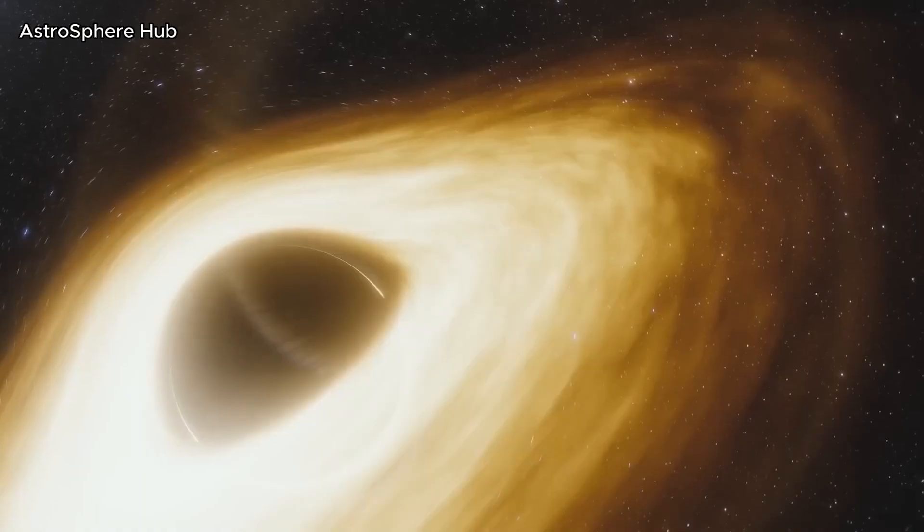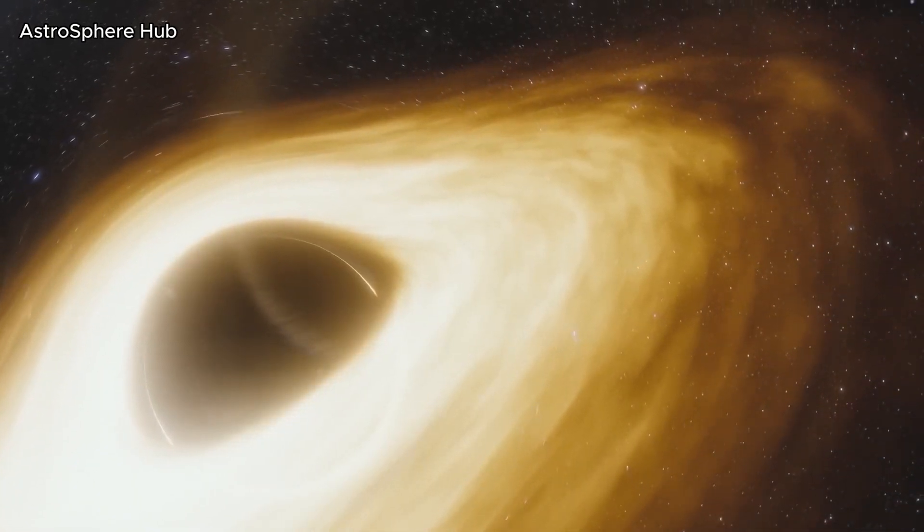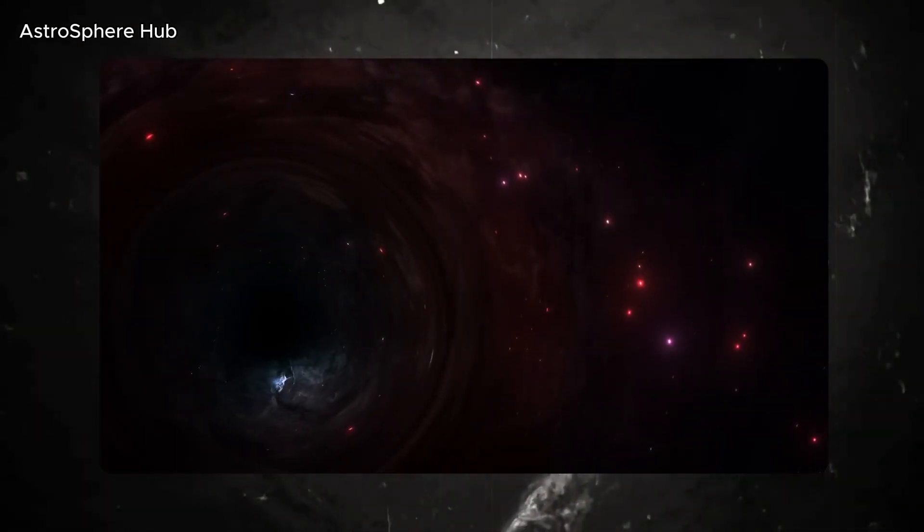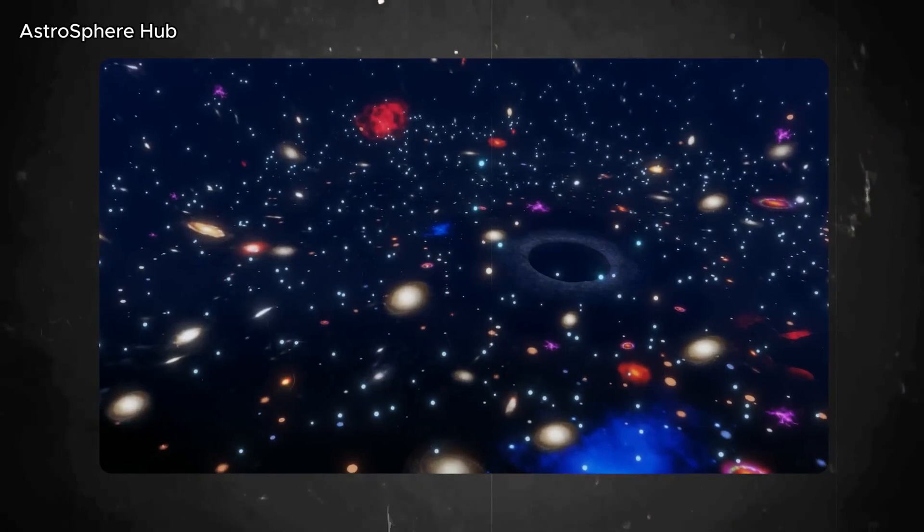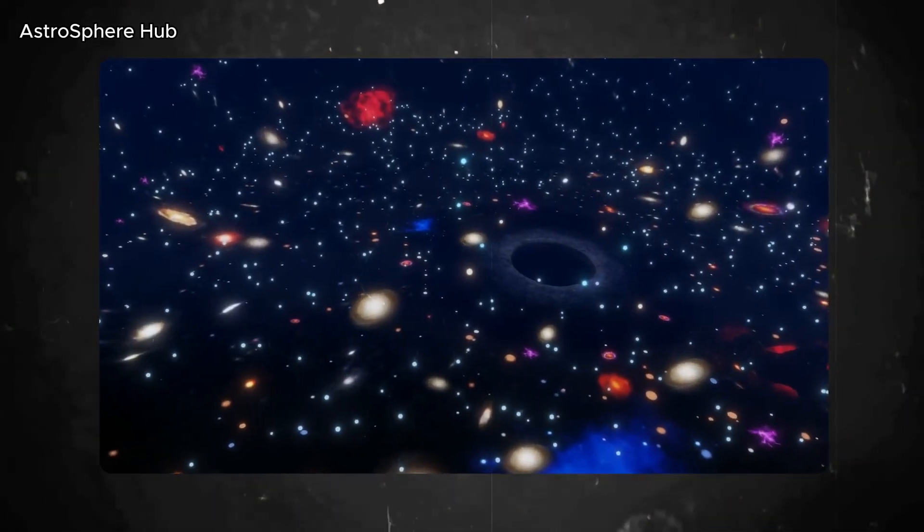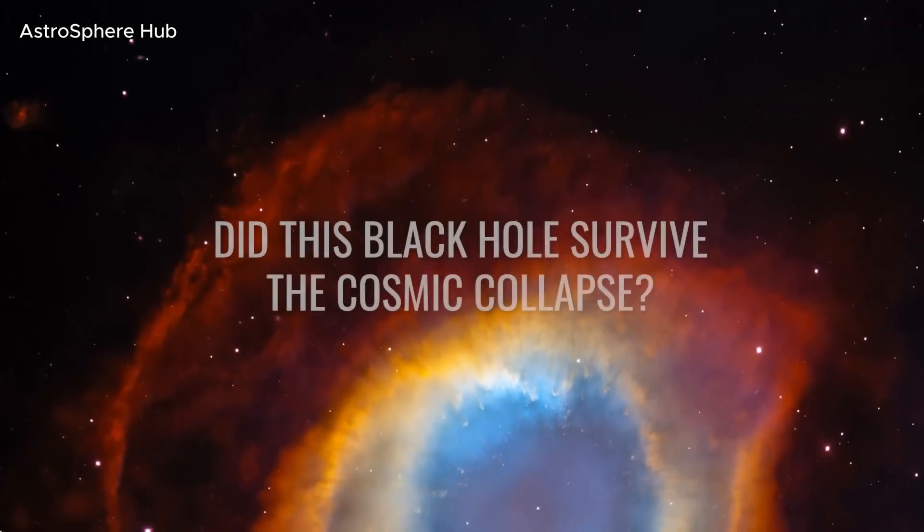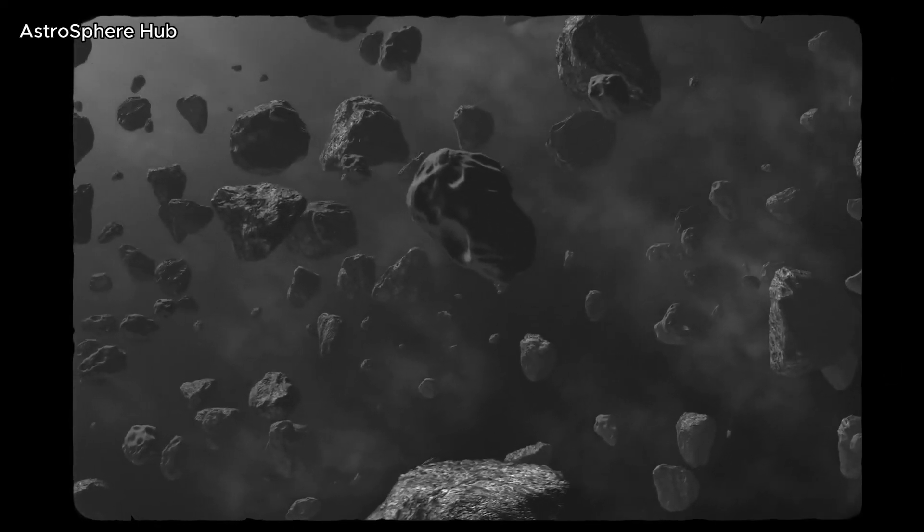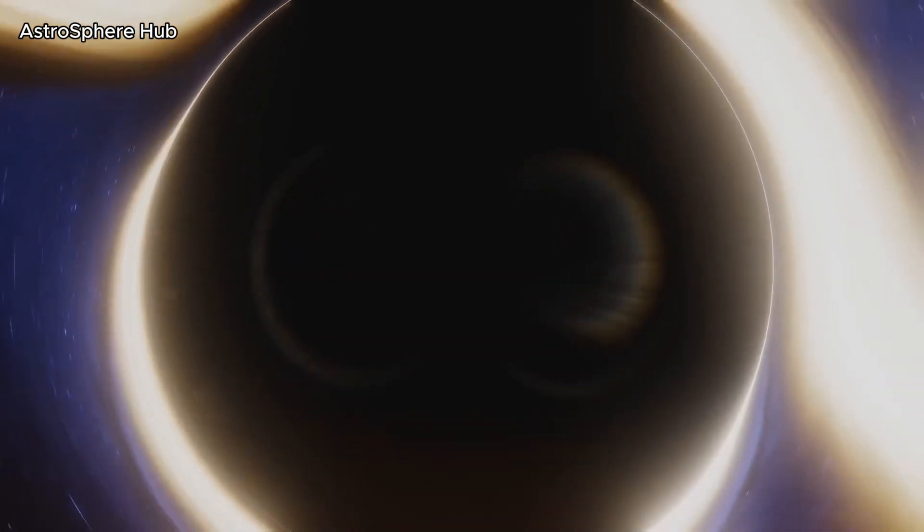According to its characteristics, WASP 12b is a gas giant with a radius about twice the size of Jupiter's. However, unlike Jupiter that performs one full revolution around the Sun in 12 Earth years, WASP 12b fully revolves around its host star in one day. Such speeds create unbelievable tidal forces on the surface of the planet, causing it to distort.